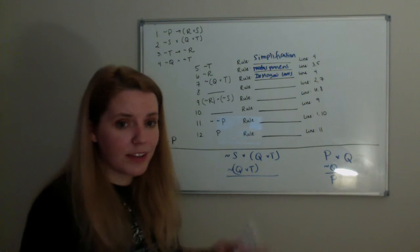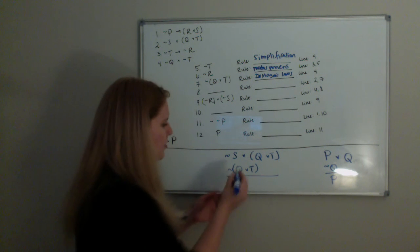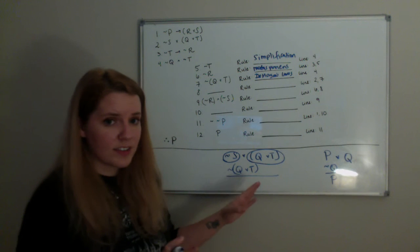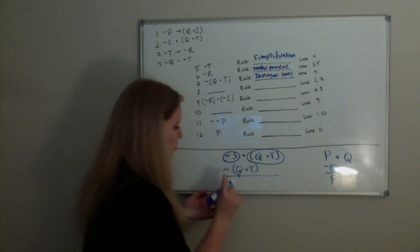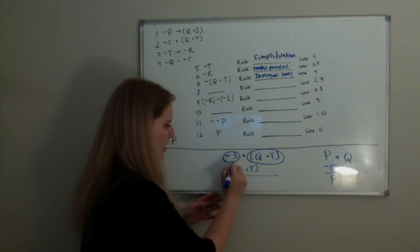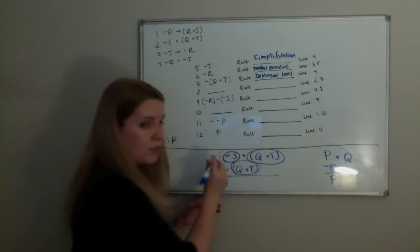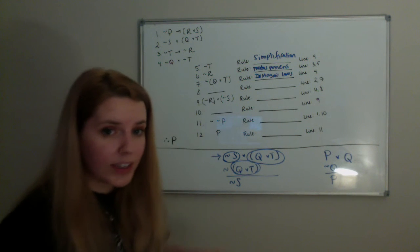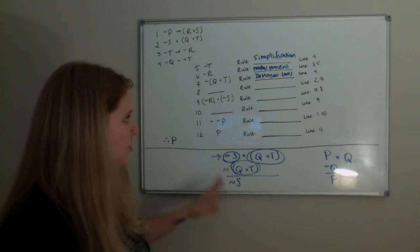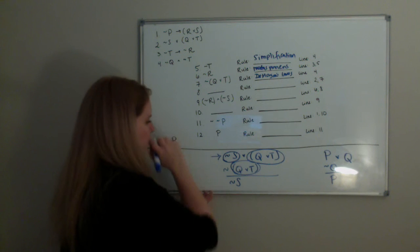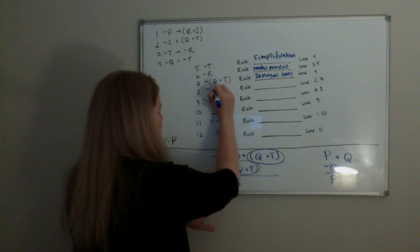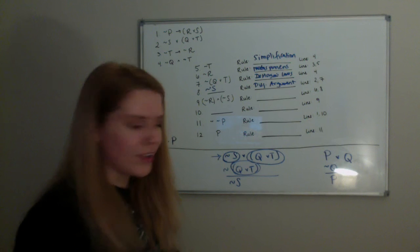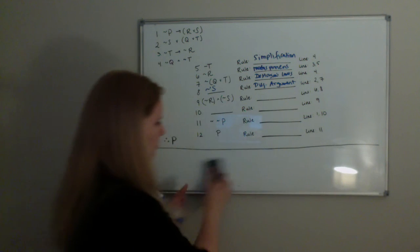Coming back to our less simplified version: here we have not S as one disjunct, and Q or T as another disjunct. Line 7, which is not(Q or T), is saying that this whole disjunct Q or T is negated. Which means the other disjunct, not S, has to be true. So we know that with disjunctive argument, we can deduce that not S is the case.